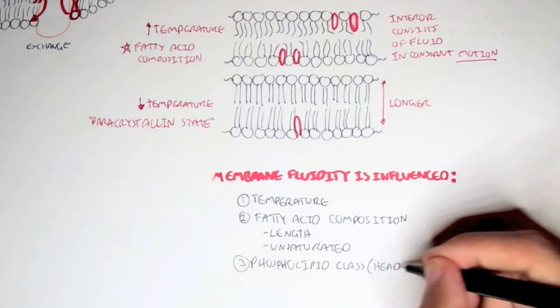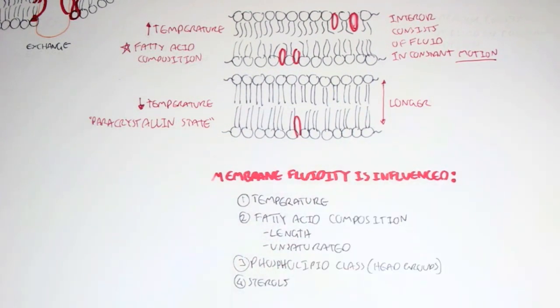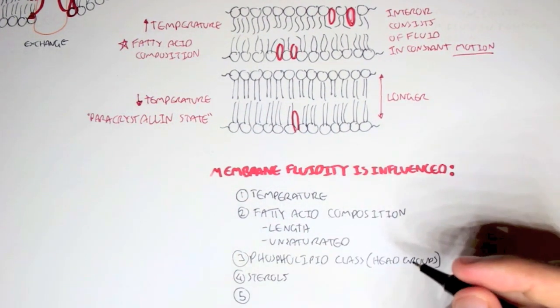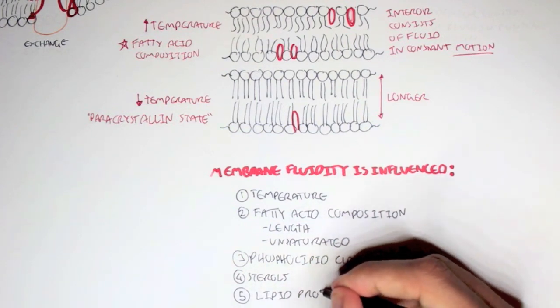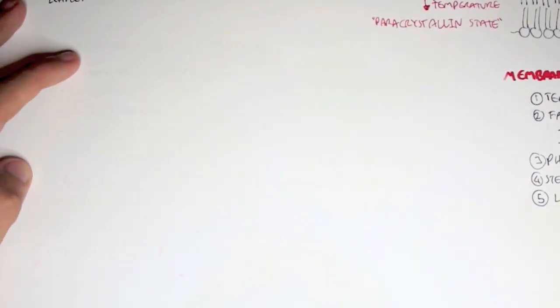Now other things that influence membrane fluidity is the phospholipid classes, such as if there's heaps of phosphatylcholines, phosphatylserines, or phosphatylinositols. Or sterols can also influence this. And lipid protein ratio, if there's a lot of proteins or if there's a lot of lipids within the cell membrane.